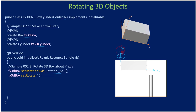We want to rotate it 45 degrees, meaning about the Y axis the box will get rotated — it will turn in the Y axis. We will see that soon using Paint 3D to easily understand it.